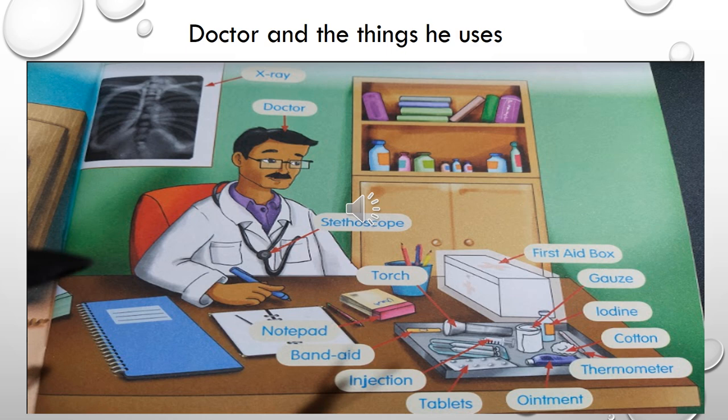What are the essential things? Can you see cotton, a thermometer, gauze, iodine, some ointment? And one more thing he has - a big injection we are all scared of, right? And I'm sure all of us have got injections when we were small kids.